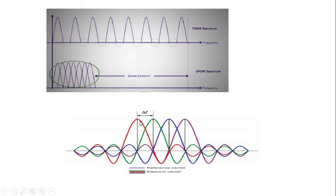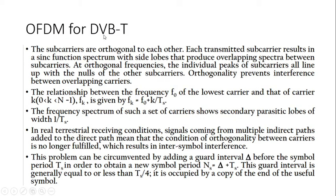At a particular peak point, all other colored carriers are at their null value — that is how orthogonality between carriers is maintained and there is no need for guard bands. We use multiple carriers with reduced bandwidth, without guard bands, and orthogonality is maintained, giving a very efficient technique. This type of OFDM is used for DVB-T. It produces overlapping spectra between subcarriers, where the individual peaks of the subcarriers line up with the nulls of the other subcarriers.